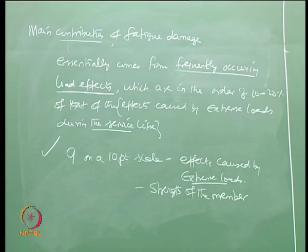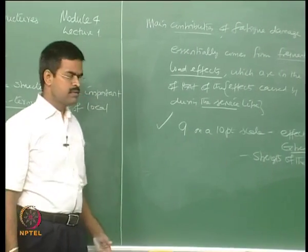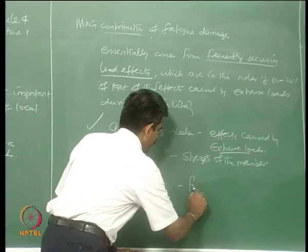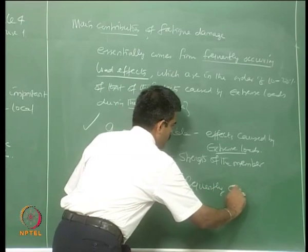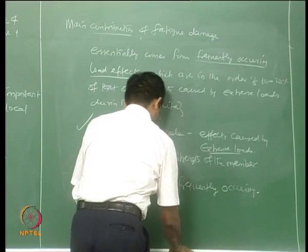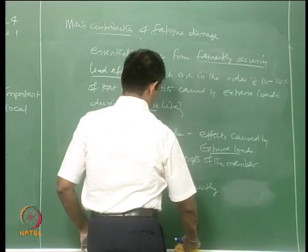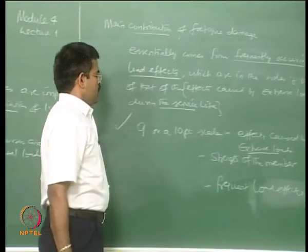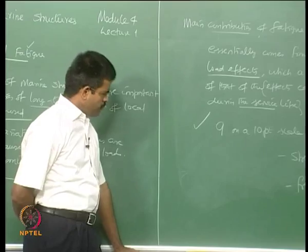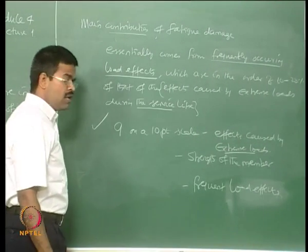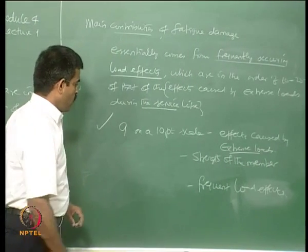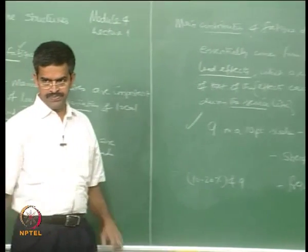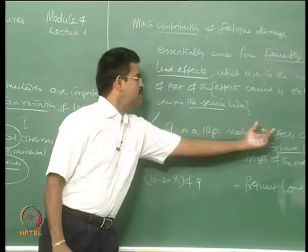There is another dimension. Let us look at other types of loads which are frequently occurring — they are not extreme loads. For this frequent set of load effects, only 10 to 20 percent of the effect of the extreme loads is seen on the members. They will not affect the strength of the member, because only 10 to 20 percent of the effect is seen.